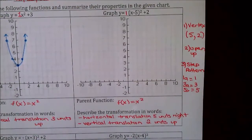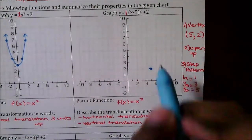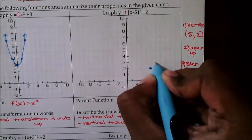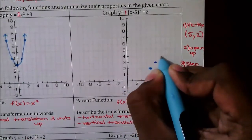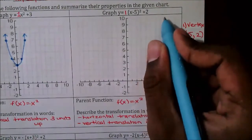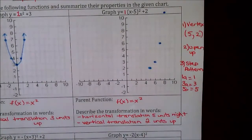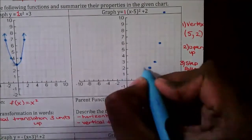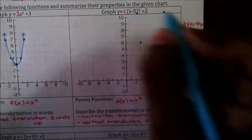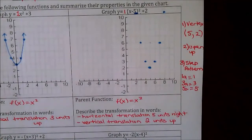Starting with vertex (5, 2), we know it's opening up so points are in that vicinity. Following the step pattern: first step is 1 — go over one and up one. Next step is three — go over one and up three. The last step, five — go over one and up five. Once you have these points, remember a parabola is a mirror image, so plot the mirrored points and connect the dots.